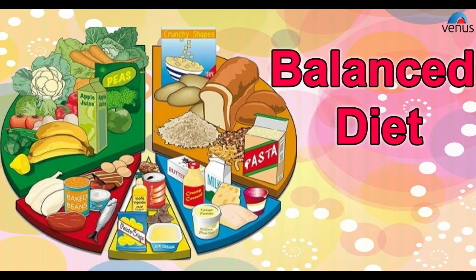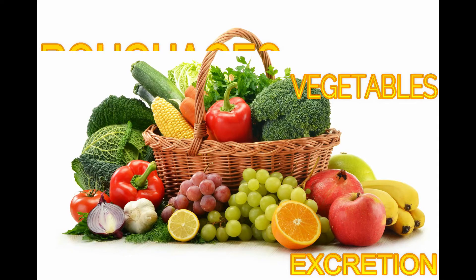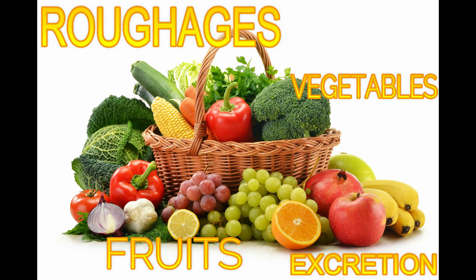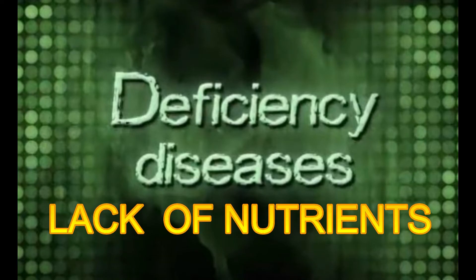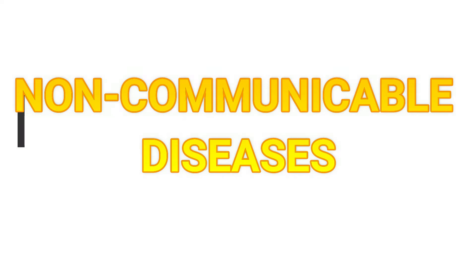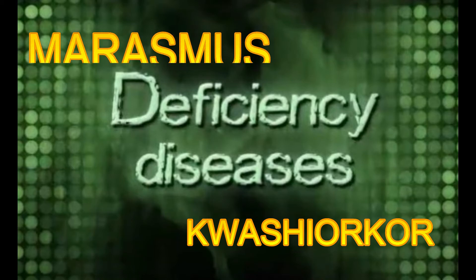So children, it is necessary that we eat a diet that contains all the essential nutrients. It should contain vegetables and fruits, which help in excretion. Here is a table that tells us about the essential nutrients, their sources and how they help us. These diseases which are caused due to the lack of one or more nutrients are called deficiency diseases. These are non-communicable diseases and are not transferred from a sick person to a healthy person.